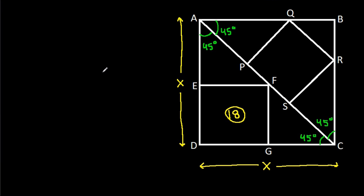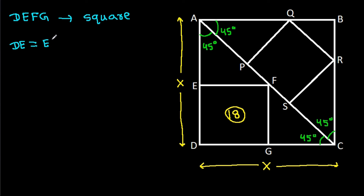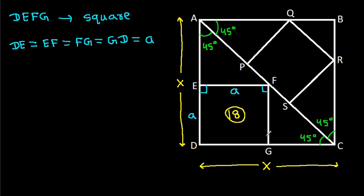Now, DEFG is also a square, so DE equals EF equals FG equals GD. Let's suppose this side is A, so DE is A and EF is A. Also, the interior angles of a square are 90 degrees, so this angle will be equal to 90 degrees.